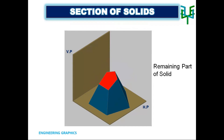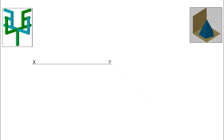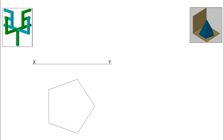When an object is resting with its base, its base can be seen in the plan. The plan is to be drawn first by having one side of the pentagon perpendicular to VP. Draw the XY line first, then construct the pentagon by having one side perpendicular to VP. Name the corners of the pentagon with numbers. A pyramid has an apex point — find it by drawing two lines from the midpoint of one side to the opposite corner.